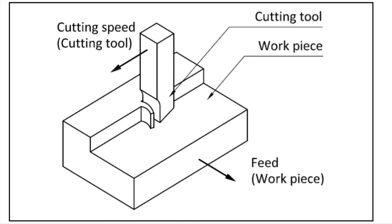Before entering into these parameters, first let us see this diagram. This is the schematic representation of a shaping operation that can be performed on a shaper machine. Here the workpiece is given at the bottom and the cutting tool moves over the workpiece in the stroke direction. The feed is provided by moving the workpiece, and the direction of feed is always perpendicular to the cutting speed direction.